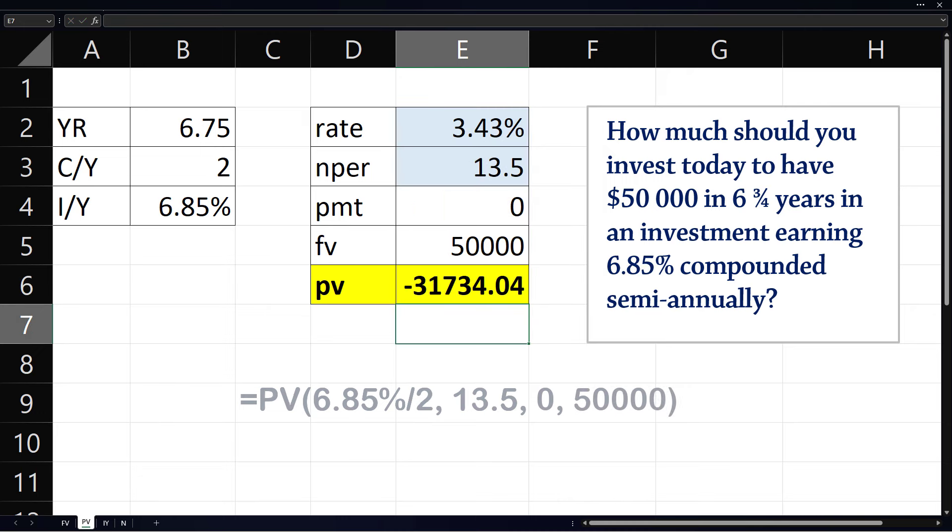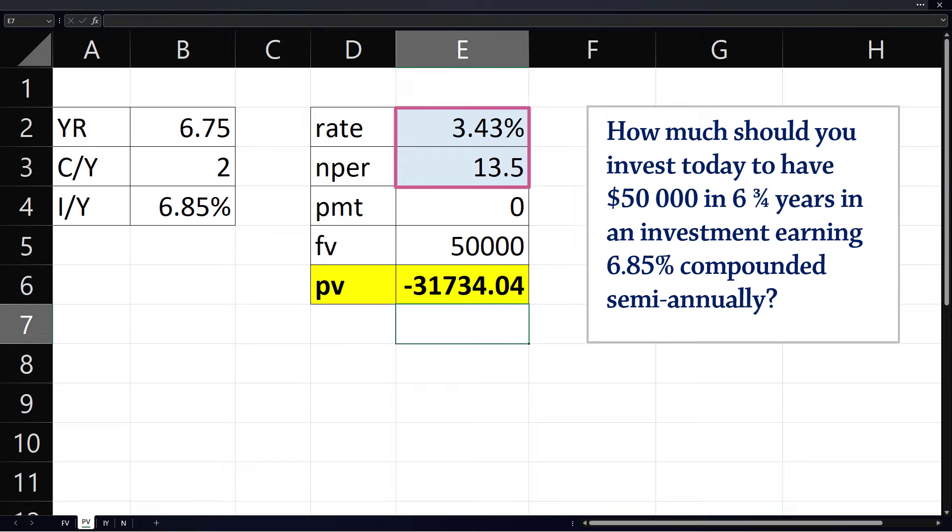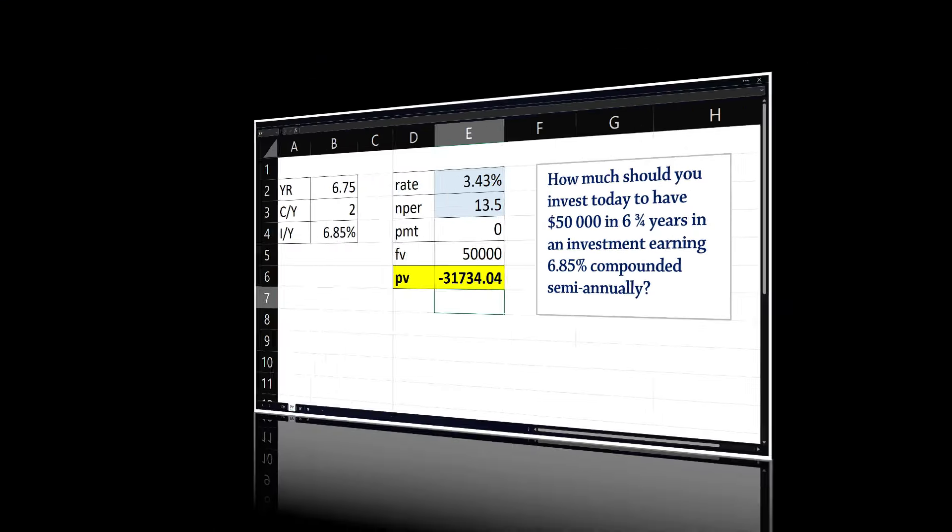And here we have the present value as negative because we entered a positive future value. The shaded cells contain formulas and won't need changing if this file is used as a template for another present value calculation.